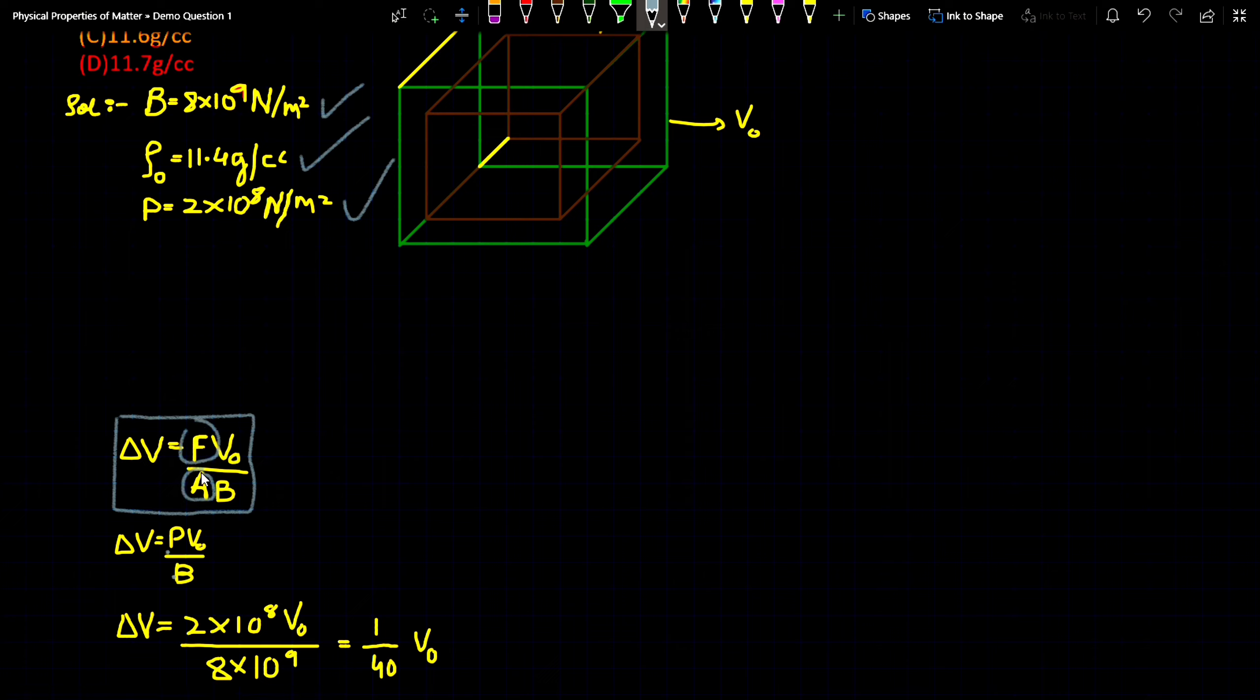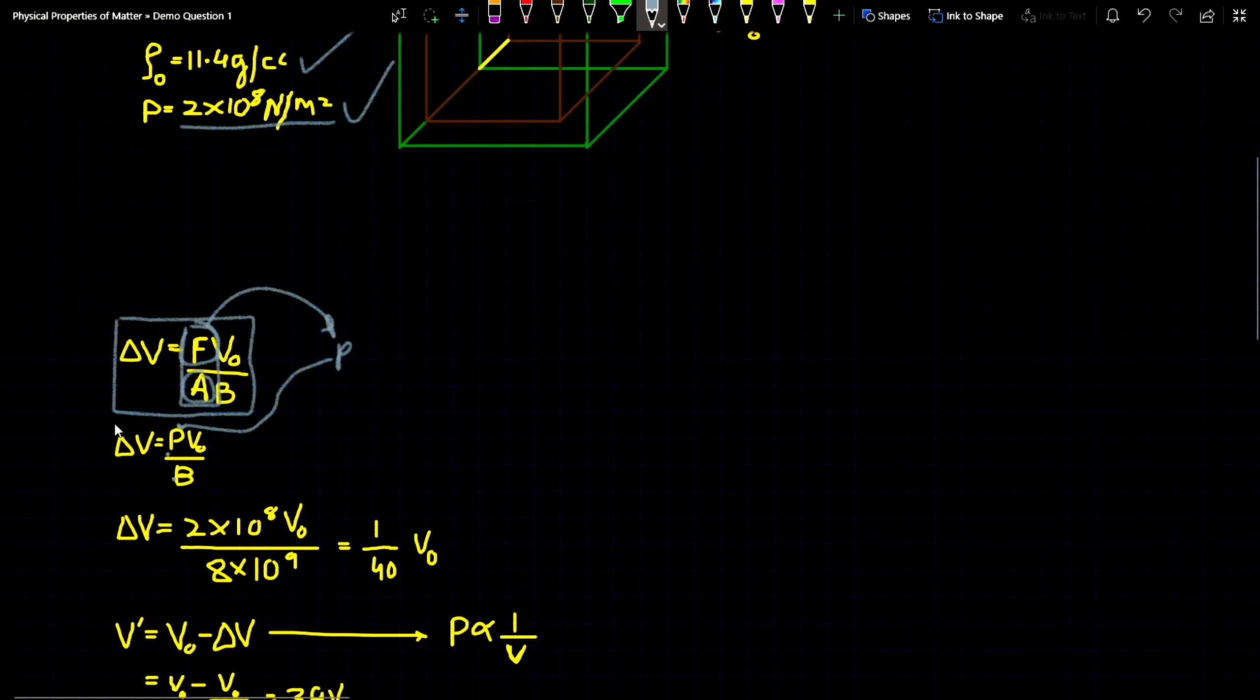There is no need of this F and A because we know that F/A is your pressure, and pressure is actually given to you which is 2×10⁸ N/m². So just substitute F/A by P and we get ΔV = PV₀/B.